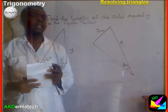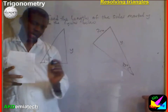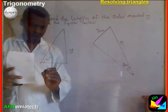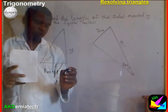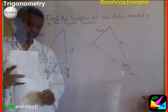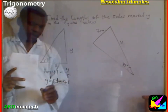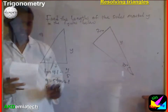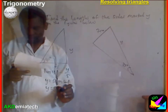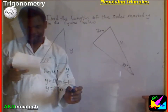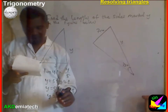Find the length of the side marked y in the figures below. This is my angle here — this is the opposite and this is the adjacent — so I use tangent. Tan 41 equals y over 5, so y equals 5 times tan 41. Tan 41 is 0.869, so y equals 4.35.